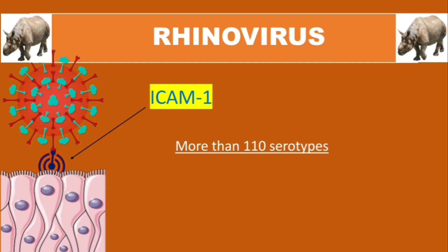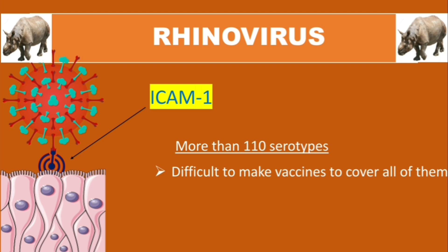Rhinoviruses have more than 110 serotypes, which makes it very difficult to make vaccines for all of them. Unfortunately, we don't have vaccines for rhinoviruses, even though it is the number one cause of the common cold in humans. Additionally, because of the large number of serotypes, immunity after infection is very weak.